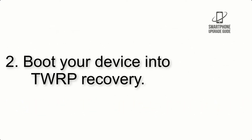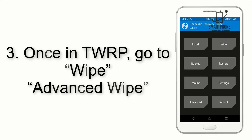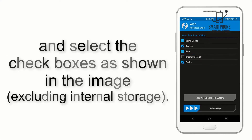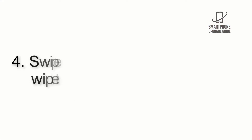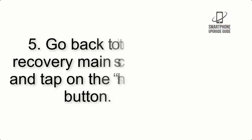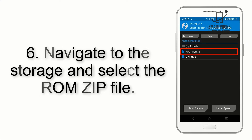Step 2: Boot your device into TWRP recovery. Once in TWRP, click on Wipe, then Advanced Wipe, and select the checkboxes as shown in the image, excluding internal storage. Step 4: Swipe the button to wipe the device. Step 5: Go back to the recovery main screen and tap on the Install button.